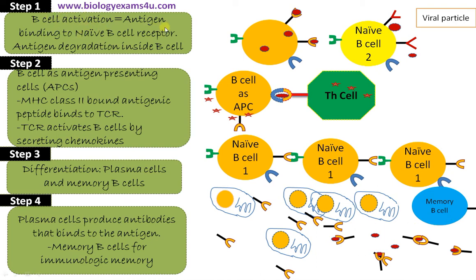So this is a summary: First, B cell activation — that is the antigen binding to the B cell receptor. In this pathway, this B cell acts as an antigen presenting cell; the antigenic particles are degraded inside the B cell and presented on MHC class 2 to T helper cells. The T helper cell receptor recognizes the antigenic peptide bound to MHC class 2, which activates the B cell in an enhanced manner, causing division and differentiation into plasma cells and memory B cells. Plasma cells are responsible for antibody production, whereas memory B cells are responsible for immunologic memory — a typical quality of adaptive immune response.